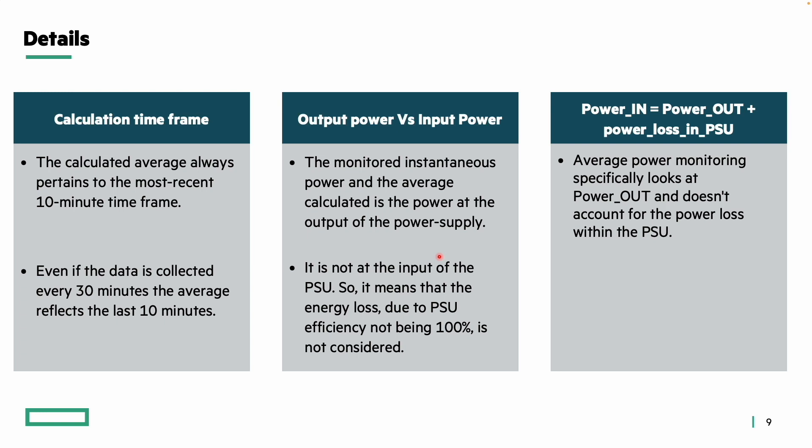Regarding calculation timeframe, the calculated average always pertains to the most recent 10-minute timeframe. For example, even if we collect data every 30 minutes, the average will reflect power usage over the last 10 minutes only. This shorter time window allows us to capture recent changes in power consumption more accurately.